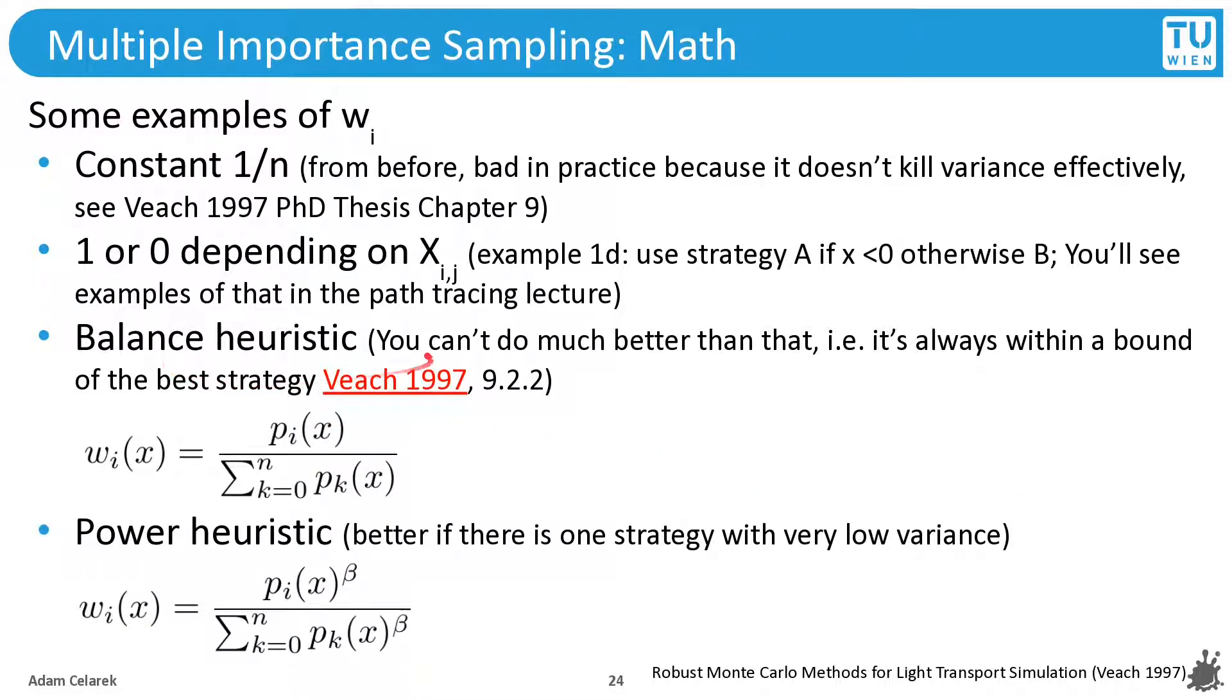And now let's go to the balance heuristic. This is the real powerful thing. Eric Veach proved that when you use this heuristic, your error will always be within certain bounds of the optimal strategy, of the best strategy that could be possibly taken.